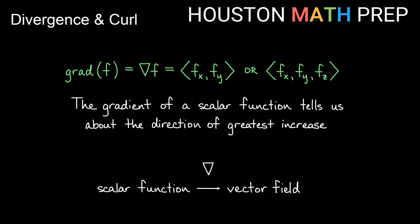First, let's do a quick review of the gradient. The gradient of some scalar function f, also written as del f, takes the partial derivative with respect to x and the partial derivative with respect to y and assigns them as the first and second components of a vector field. In three-dimensional space, we include an extra partial fz term as well. The gradient of a scalar function tells us about the direction of greatest increase. So this del operation takes a scalar function as input and outputs a vector field.